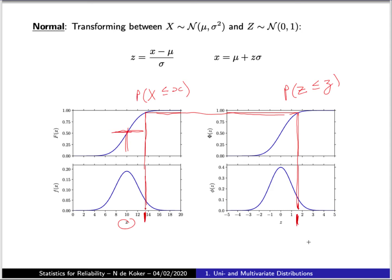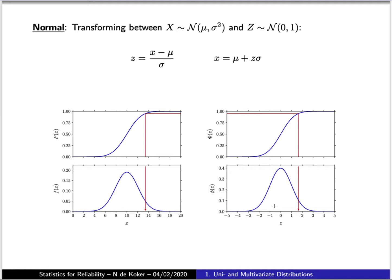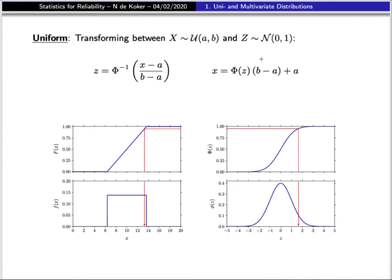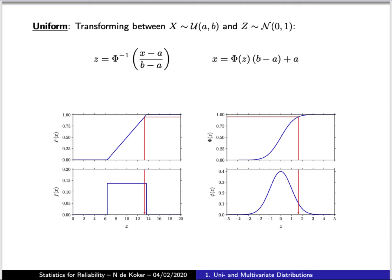These values are equivalent in the sense that they both have the same probability values associated with them. In the case of a normally distributed random variable, this transformation can be done analytically using exactly the equation seen earlier, writing the standard normal variable in terms of the normally distributed random variable. We can play the same game for a uniformly distributed random variable, where a particular instance corresponds to a specific probability value for which the corresponding standard normal variable value has the same probability.